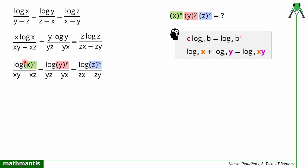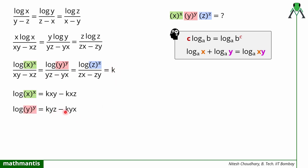Now, suppose I call these three expressions a, b, and c. I need to generate a multiplied by b multiplied by c, but all three are in terms of log. Since multiplication of log arguments corresponds to addition of log terms, I assume the common ratio to be equal to k. Then: log of x raised to power x equals k times (xy minus xz); log of y raised to power y equals k times (yz minus yx); and log of z raised to power z equals k times (zx minus zy).